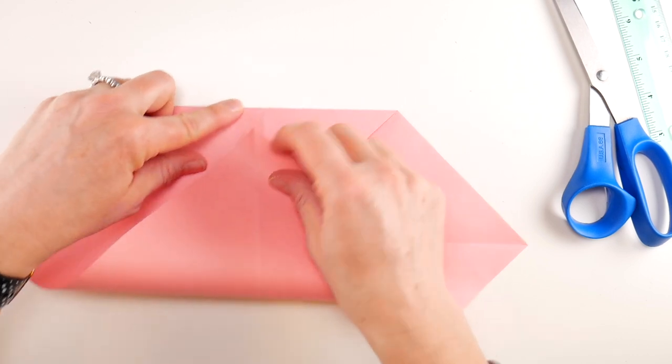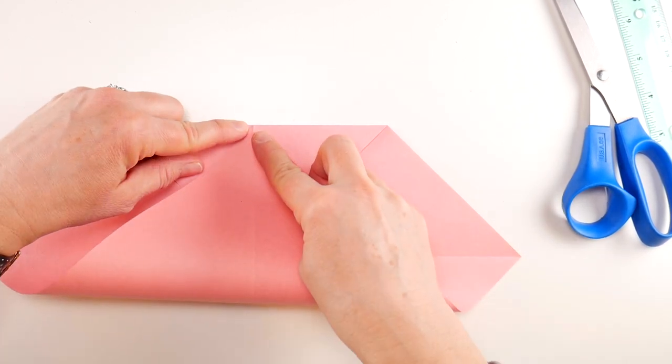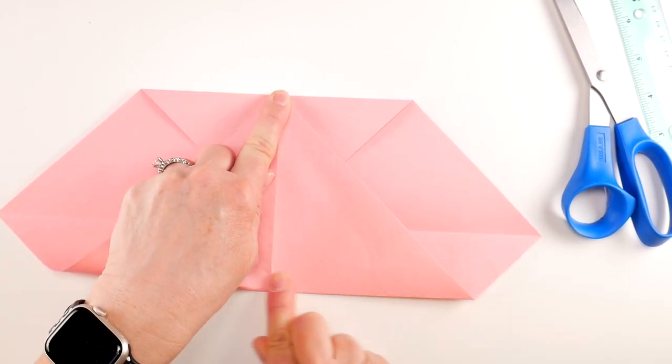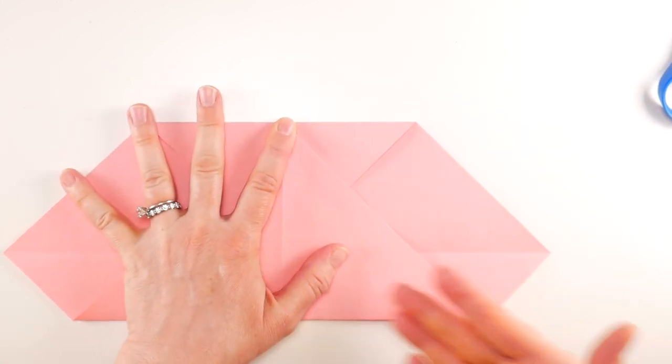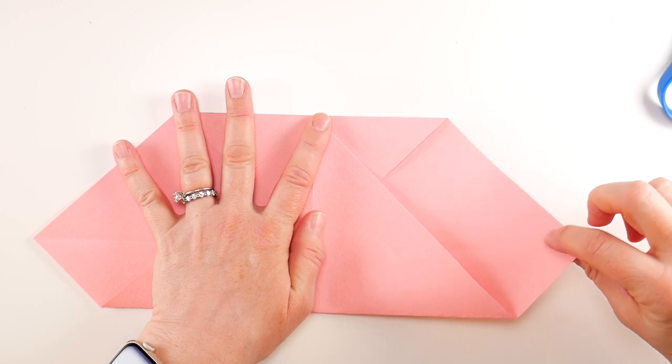Bring it to the very top of our paper. You can use these folds as a guideline, just bring it up to the top like so. Get your crease nice and sharp. Then we're going to bring up the sides now. You'll take this point on the side and use this crease again as a guideline.